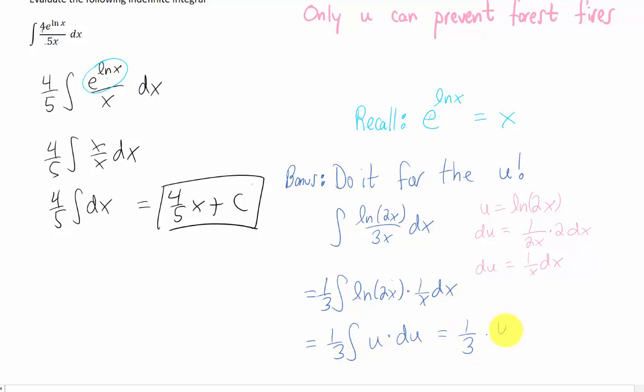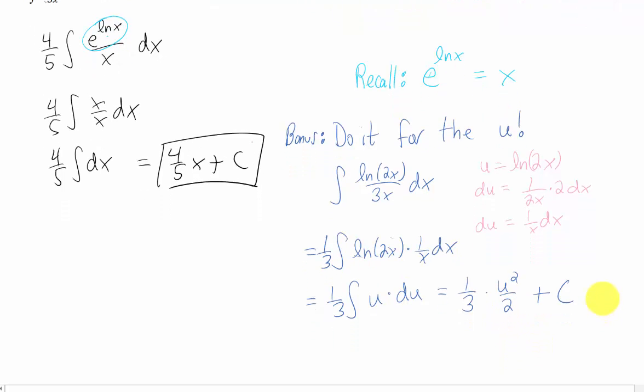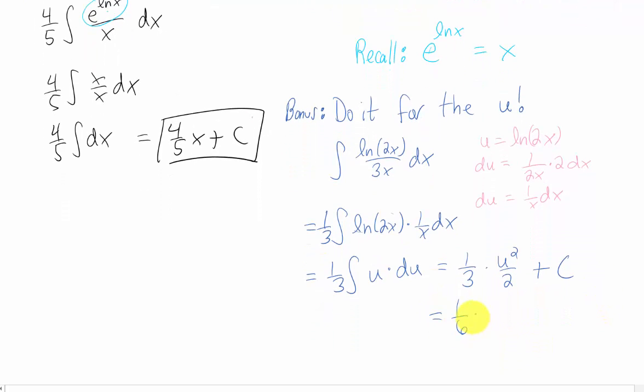That's just going to give us 1 third times a u squared over 2. Simplifying a little bit gives us a 1 sixth u squared plus c, and if we plug our natural log back in for u, we get this as our final answer.